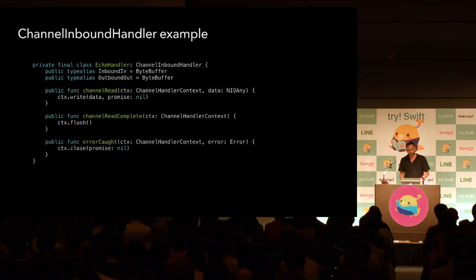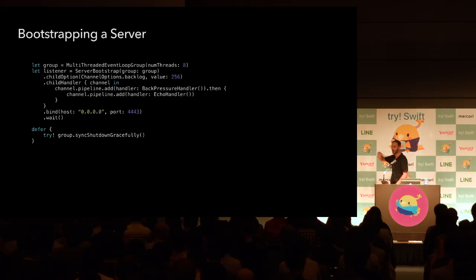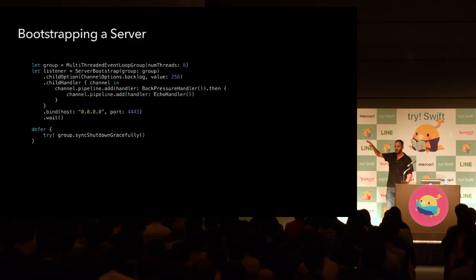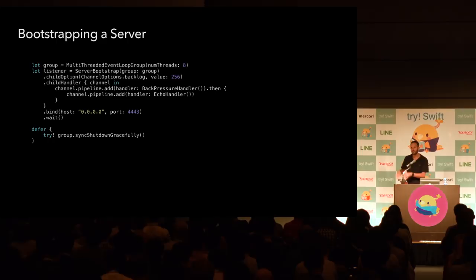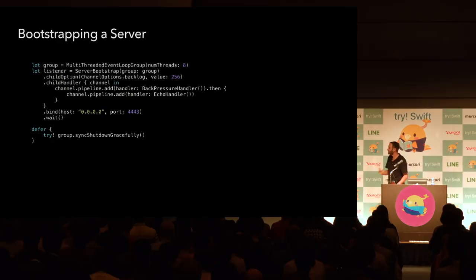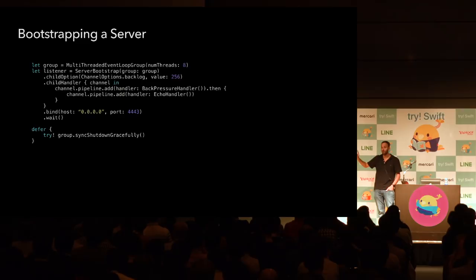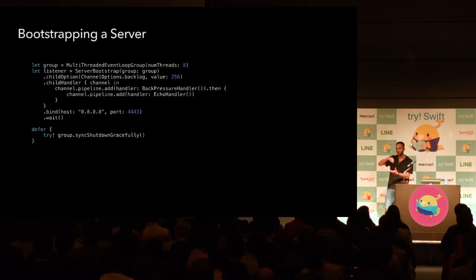So how do you marry all of this together? We have bootstraps. Here, bootstrapping the echo server: you build the EventLoopGroup specifying the number of threads, set child options for accepted channels, set the child handler to configure your pipeline with the handlers you want, then call bind to bind the socket, and wait — which blocks until done. This is only safe here because we are not in the event loop; you should never block the event loop. Interestingly, you can modify the pipeline on the fly, enabling connection or protocol upgrades by removing, replacing, or adding handlers dynamically.